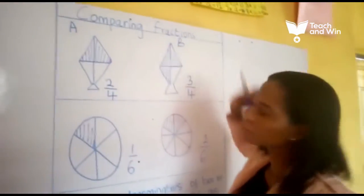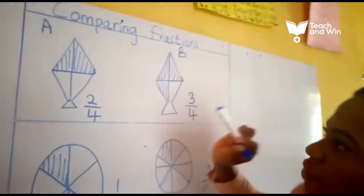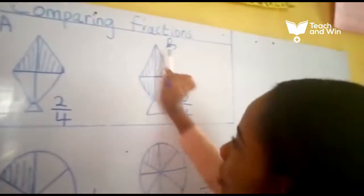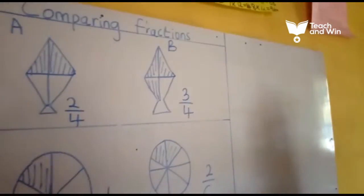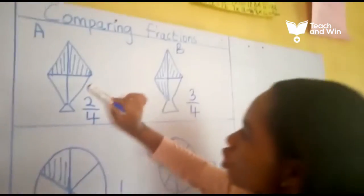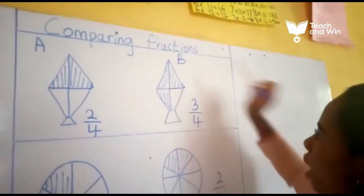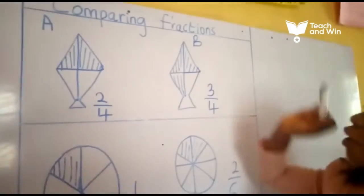But today we are going to compare fractions. Now let's take for example that A and B are in a coloring competition. A colored 2 over 4 of this kind, while B colored 3 over 4 of this kind.